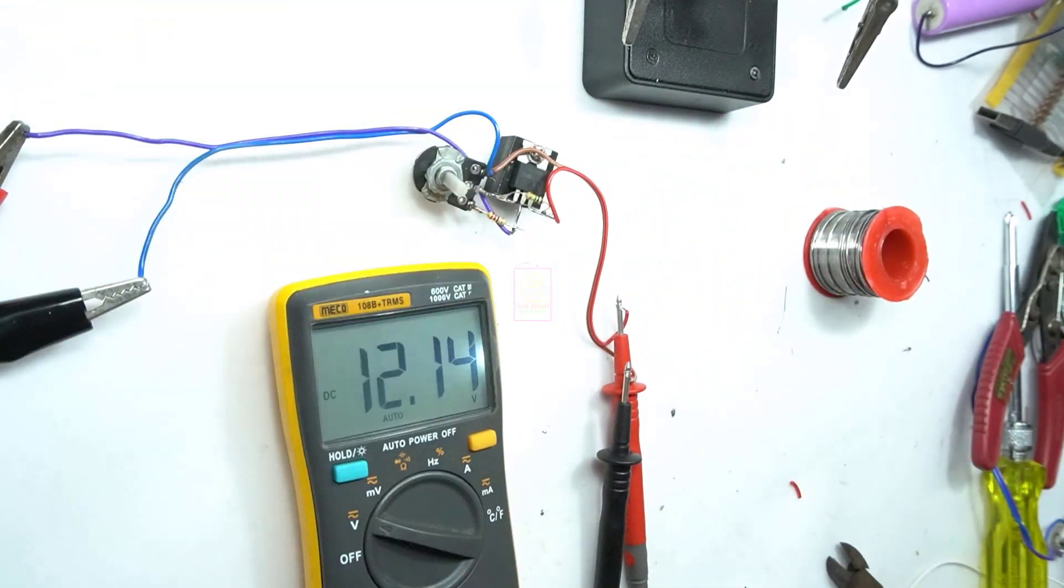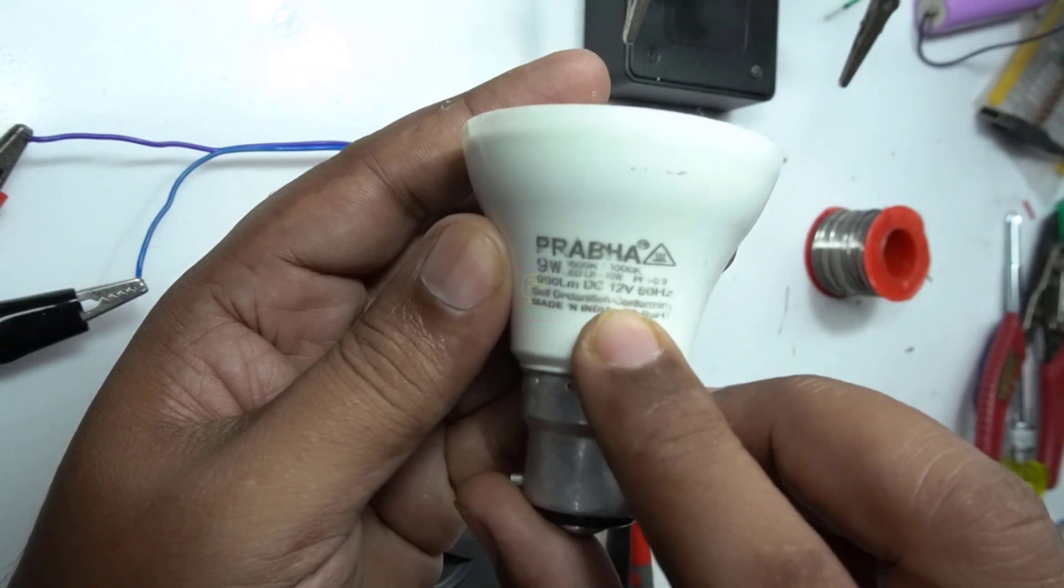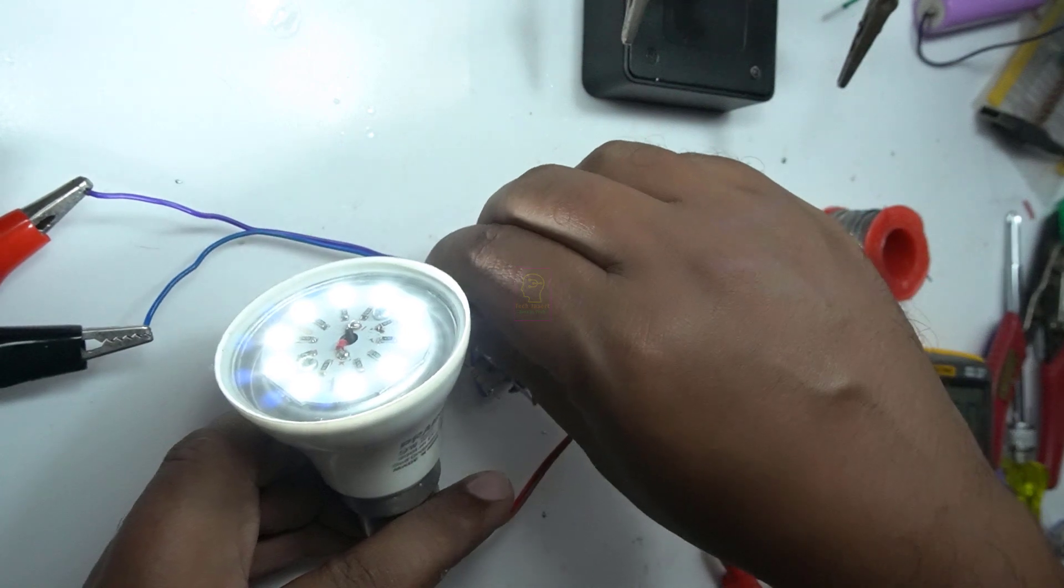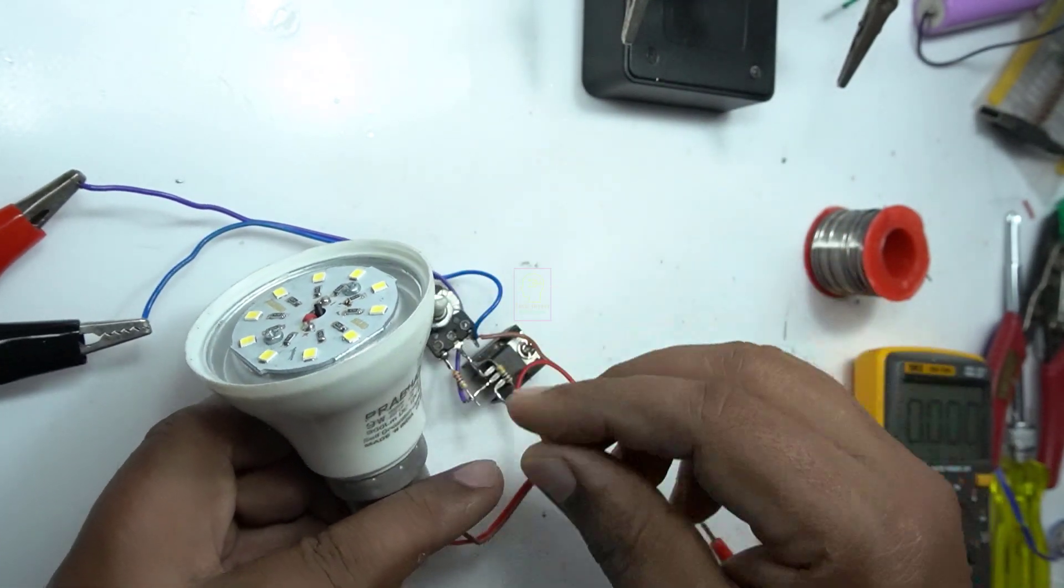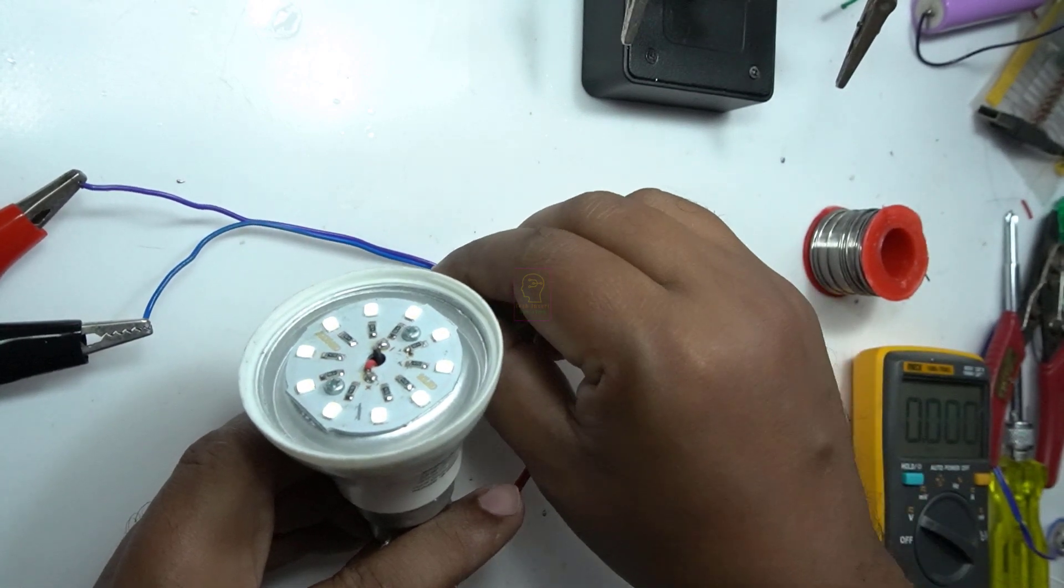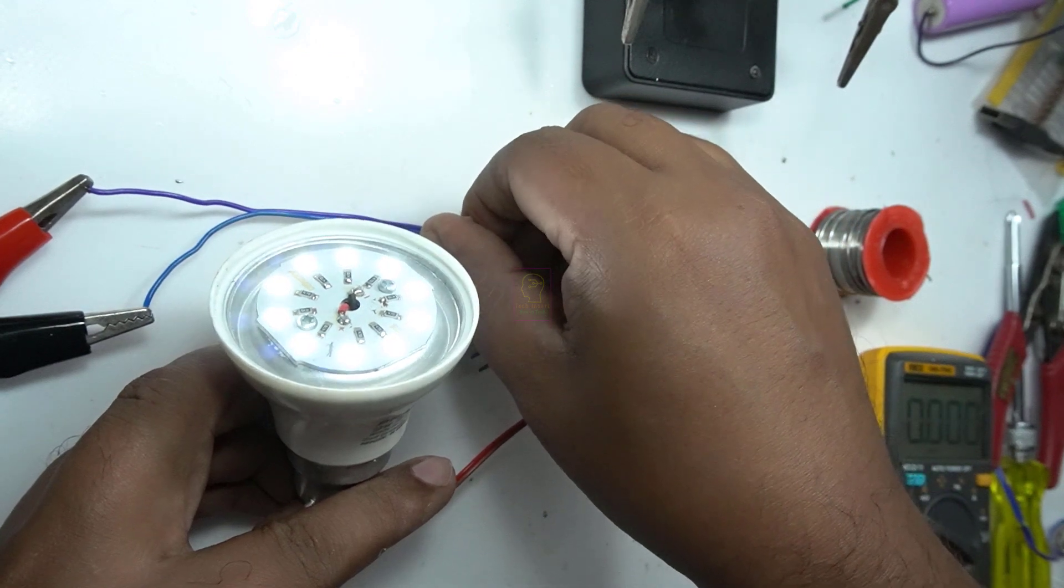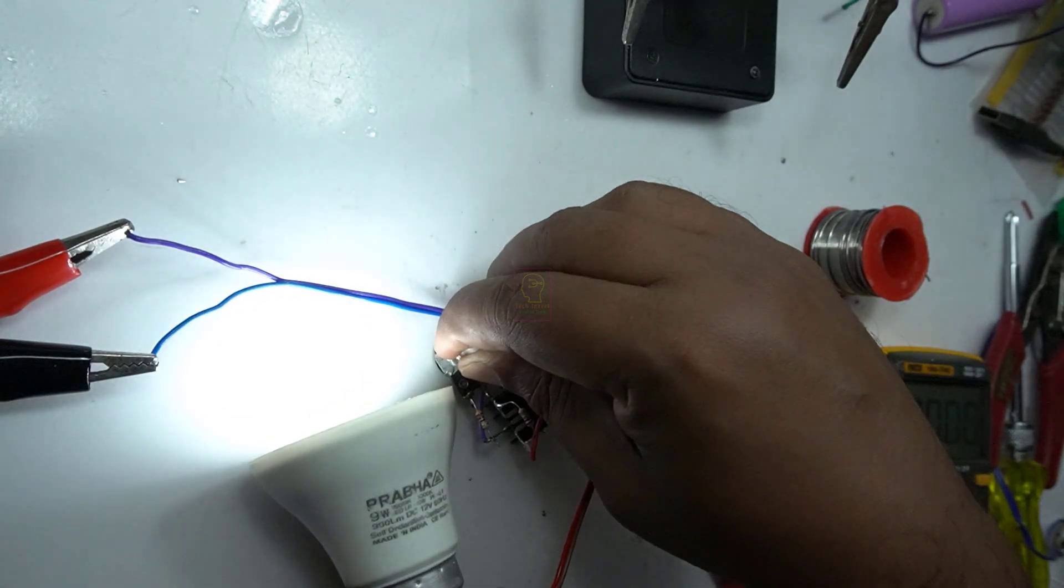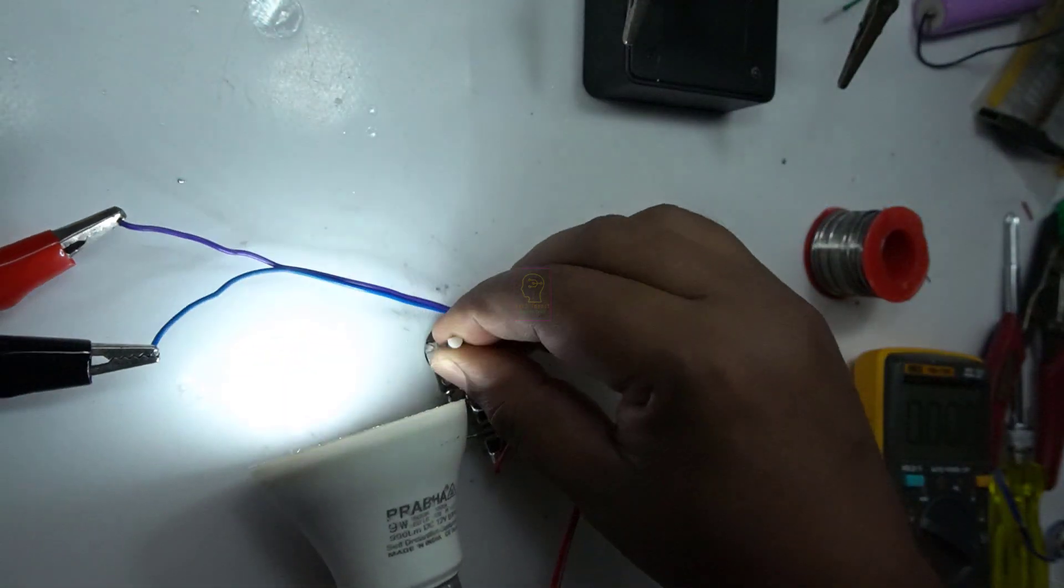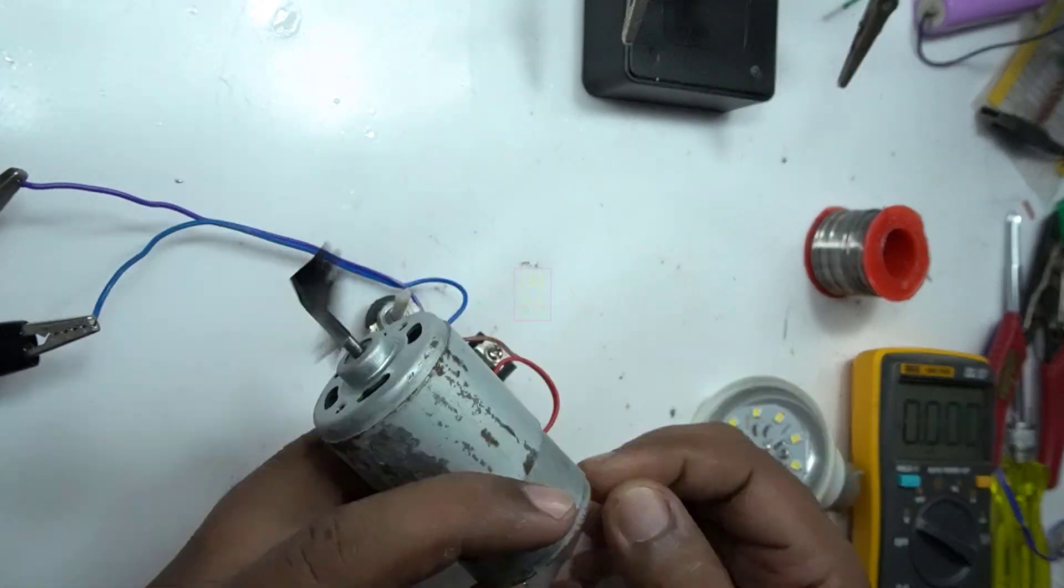First we will test using a 12 volt LED bulb. Now we will give a motor as a load. This motor will pull 1.5 ampere maximum. I will give you the original sound and there are a lot of background noises in it.